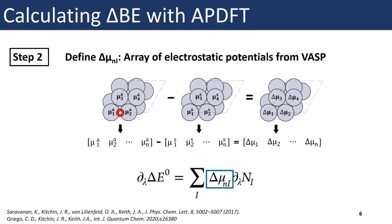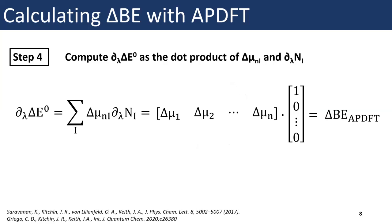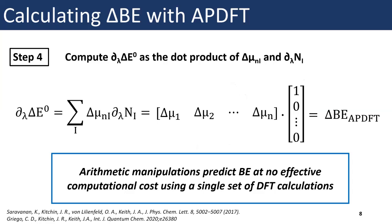Now we have all the information we need from a single set of DFT calculations, and we can make countless predictions and generate a lot of binding energy data on hypothetical alloy catalysts. We hypothesize these catalysts by recording the atomic number of every atom in the reference slab — pure platinum — then making any transmutations we wish and re-recording all atomic numbers for the alloy slab. Taking the difference gives us a new array showing where the transmutations occur. Finally, we calculate our first-order derivative by taking the dot product of our two arrays, giving us the change in binding energy using only arithmetic and a single set of DFT calculations.